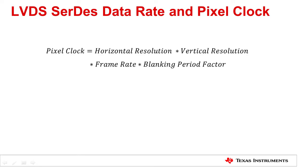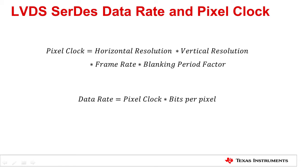In short, here is the formula for calculating pixel clock and data rate. Pixel clock equals horizontal resolution times vertical resolution times frame rate times blanking period factor. Data rate equals pixel clock times bits per pixel.